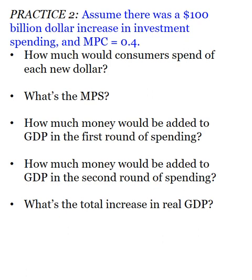Now let's do another practice problem. Assume there was a $100 billion increase in investment spending and MPC is 0.4. How much would consumers spend of each new dollar? If MPC is 0.4, they're going to be spending $0.40 of every dollar. What's the MPS? It is 0.6 — not 60 cents, because MPC and MPS are just decimals. How much money would be added to GDP in the first round of consumer spending? That would be $100 billion times 0.4, which gives us $40 billion.